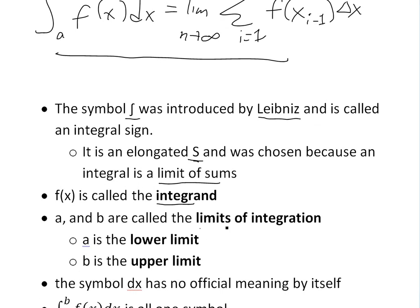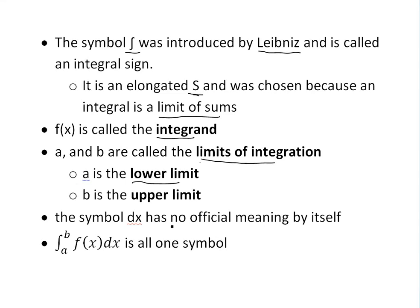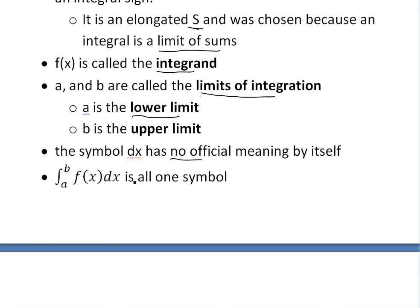a and b are called the limits of integration. a is the lower limit, b is the upper limit, and the symbol dx has no official meaning by itself, but you could also interpret it as delta x, or as it goes to infinity, small. And basically, this entire integrand is just one symbol here.